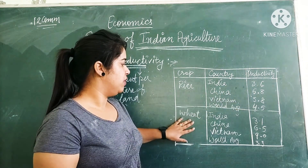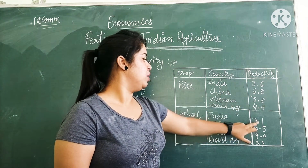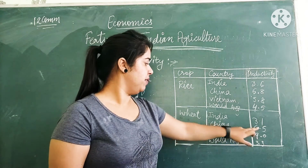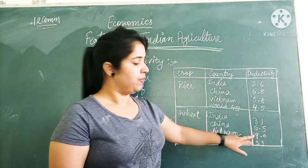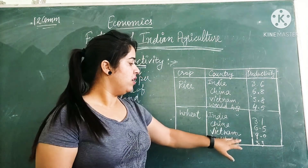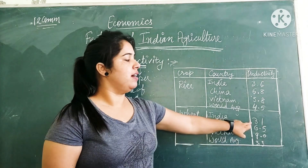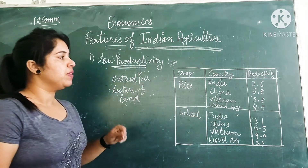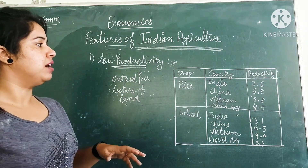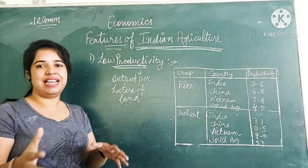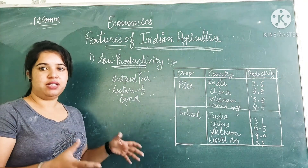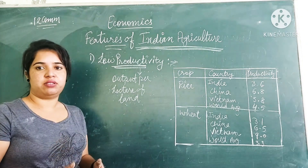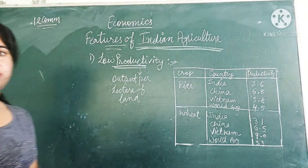Similarly for wheat, in India it is 3.1, in China 6.5, and another country 8.9, while the world average is 3.3. India is still at 3.1, which shows that India is lacking behind and production is less as compared to other countries.